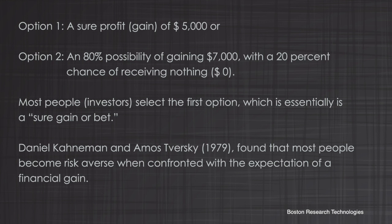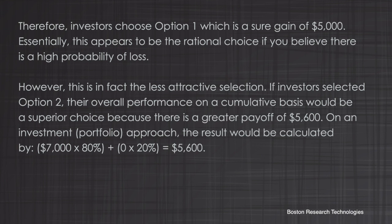Kahneman and Amos Tversky found that most people become risk averse when confronted with expectations of a financial gain. Therefore, investors choose option one, which is a sure gain of five thousand dollars, and essentially this appears to be the rational choice. However, if investors selected option two, their overall performance on a cumulative basis would be superior, because there is a greater payoff.